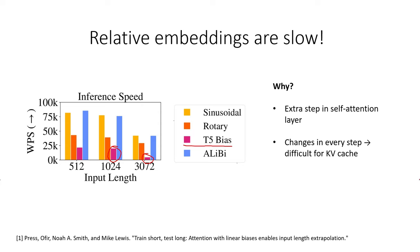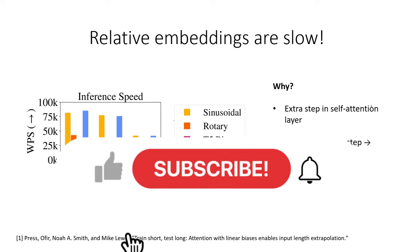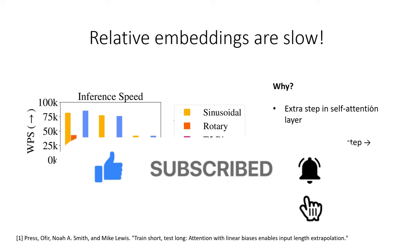If you're not sure what is the key value cache, check out my video here that explains how it works and why we need it. But because of the practical engineering challenges here, relative embeddings are not very commonly used today, especially in larger language models. By the way, if you made this far, please smash the like button to feed the YouTube algorithm, and subscribe to my channel to get notified when I post new machine learning content.